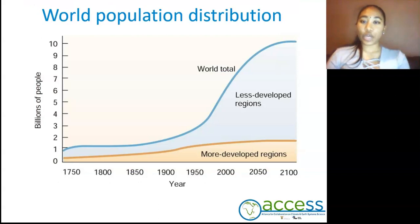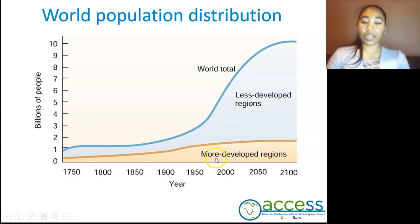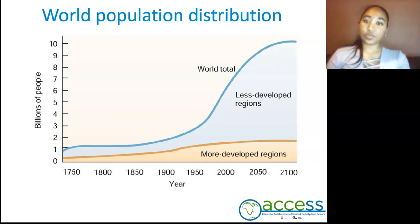Now we need to understand how the population is distributed on a global scale, and for this we have our world population distribution graph. On our y-axis we have billions of people, and our x-axis we have years. As you can see, we have exponential growth in our less developed regions in comparison to our more developed regions. The factors affecting this are that less developed regions have slow economic growth, limited access to medical facilities, and lack of education.